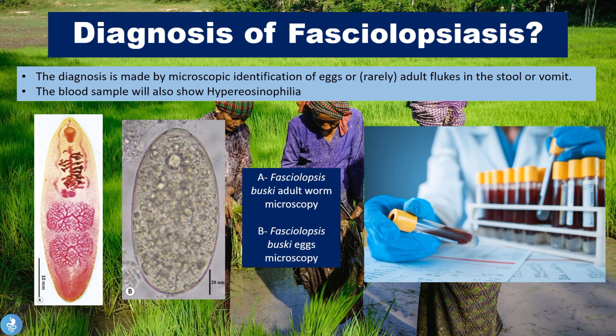Now let's talk about the diagnosis of fasciolopsiasis. The diagnosis is made by the microscopic identification of eggs or, rarely, the adult flukes in the stool or vomitus of the patient. In these two pictures, image A shows what the adult worm or fluke looks like on microscopy, and image B shows what the eggs look like on microscopy. The blood sample will also show signs of hyper-eosinophilia.